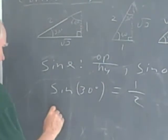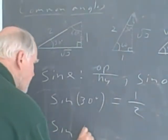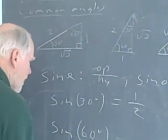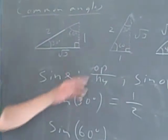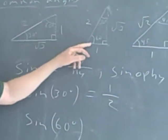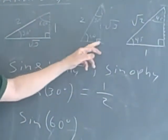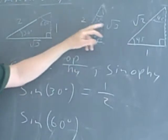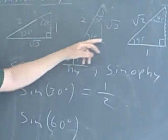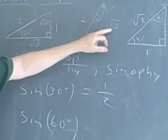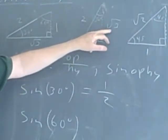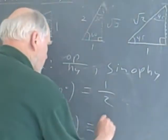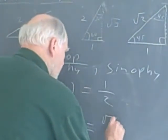Now I'm interested in the sine of 60 degrees. To find that, I have my 60-degree angle and I drop my altitude. I have my respective sides here, and it's the opposite over hypotenuse — root 3 over 2, the square root of 3 over 2.